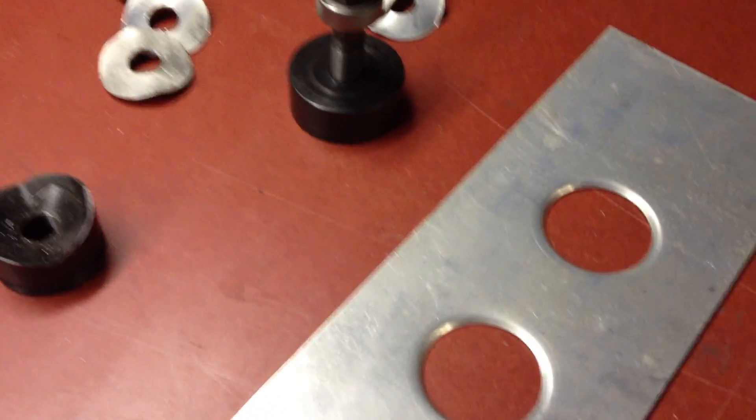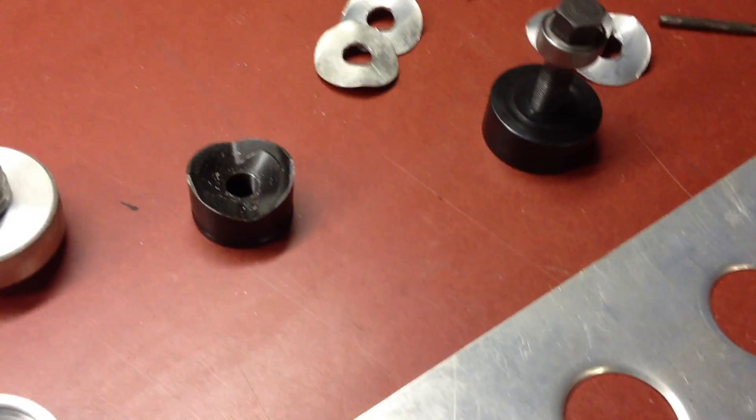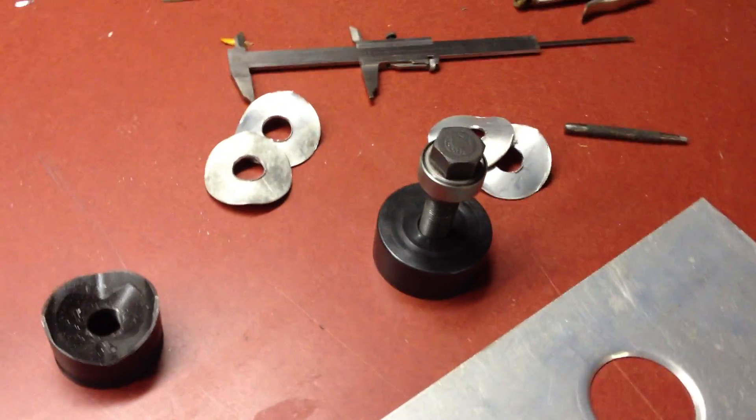Now the way we do that is, first thing we're going to do is mark the location of our hole, center punch, and drill some pilot holes for the knockout punch.